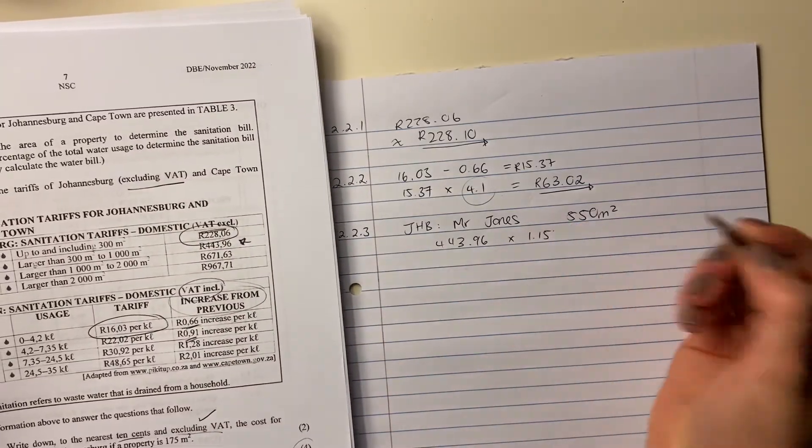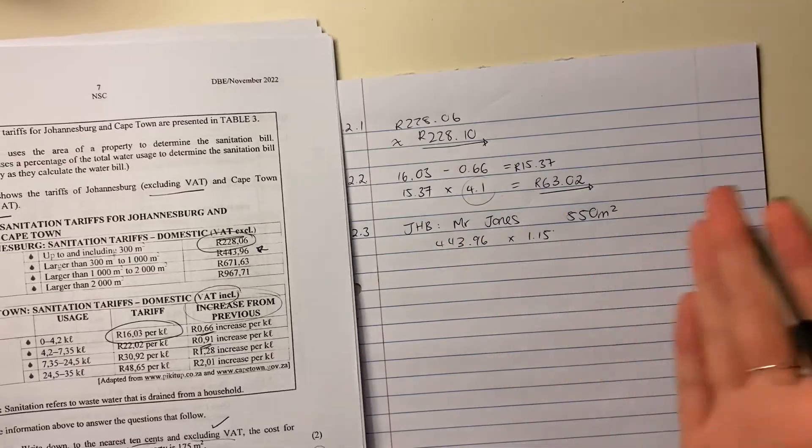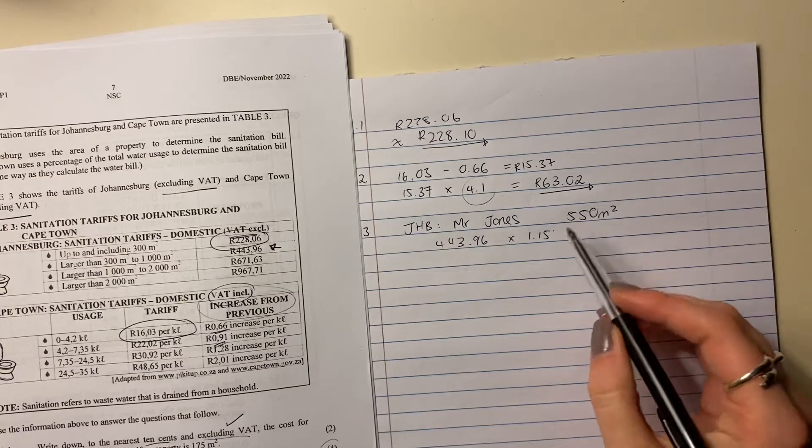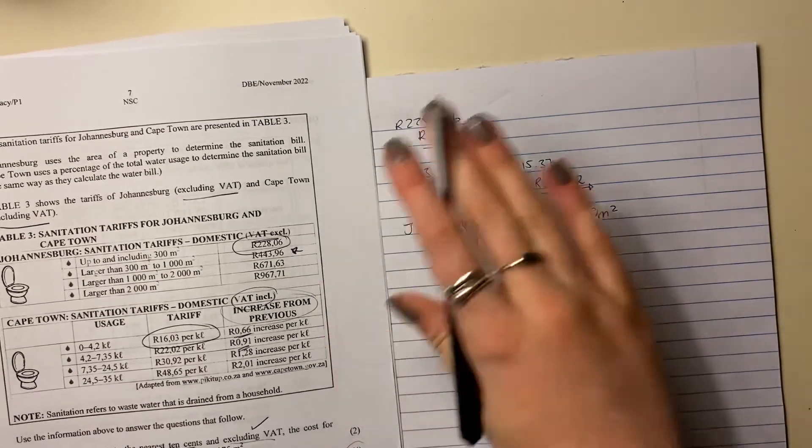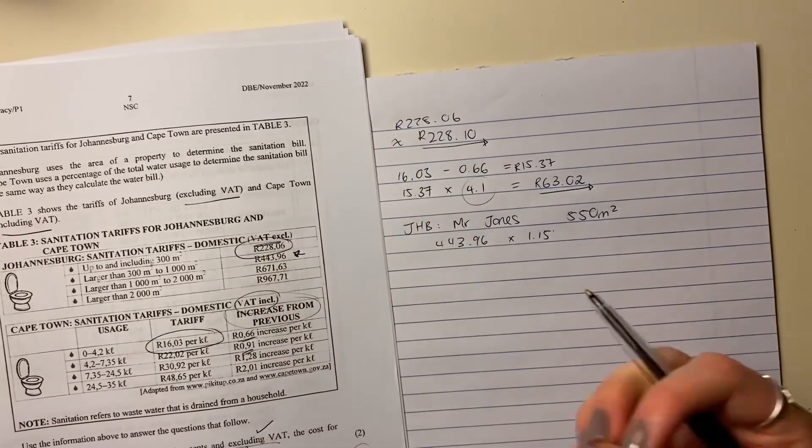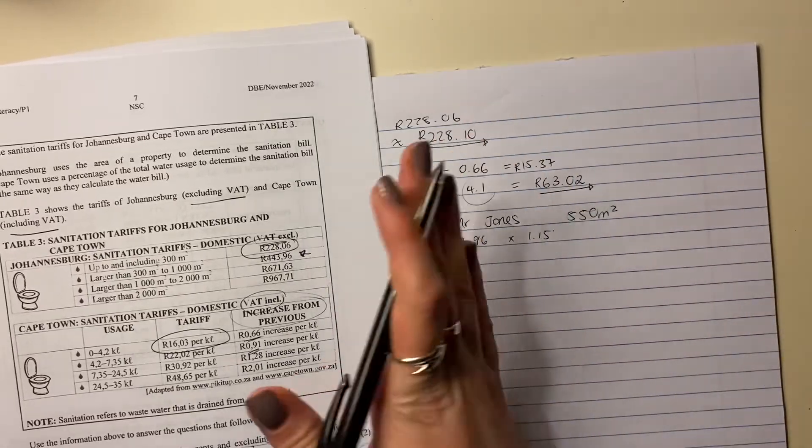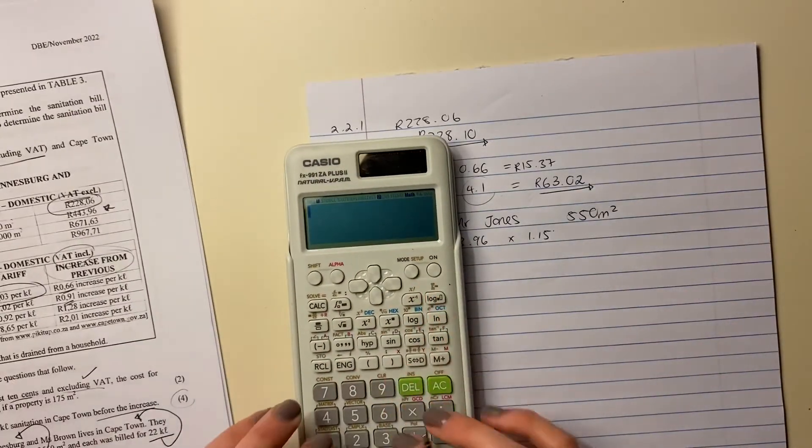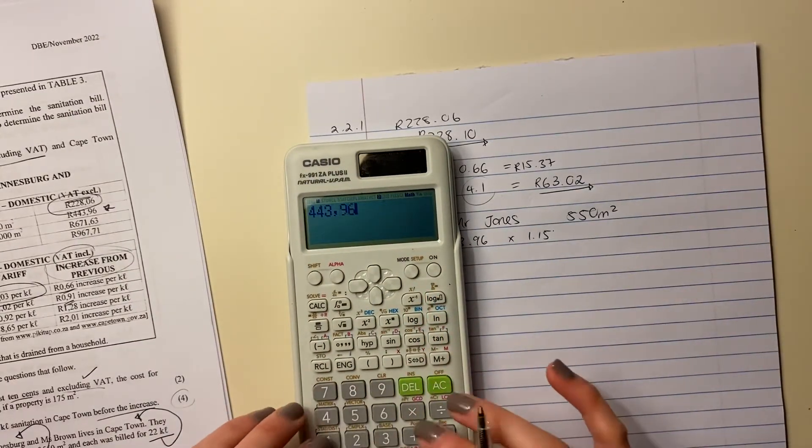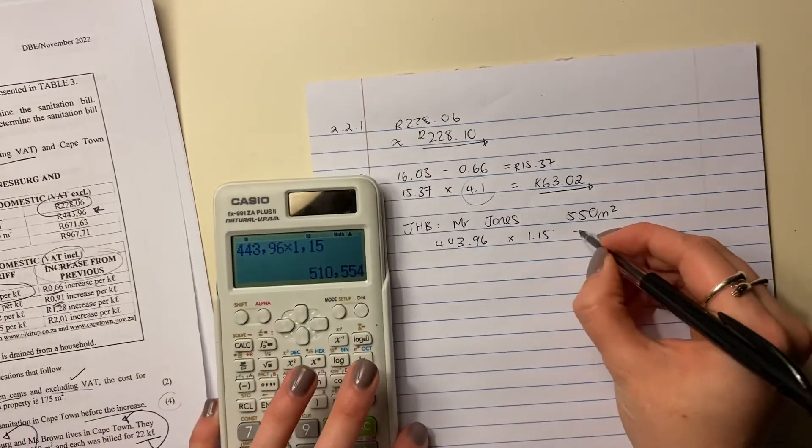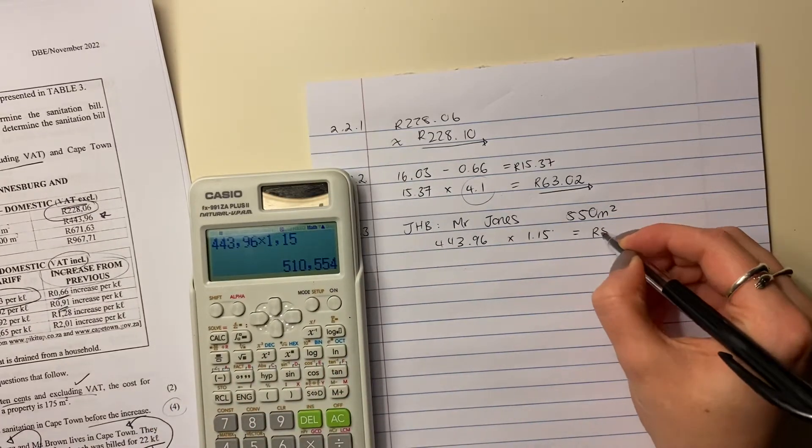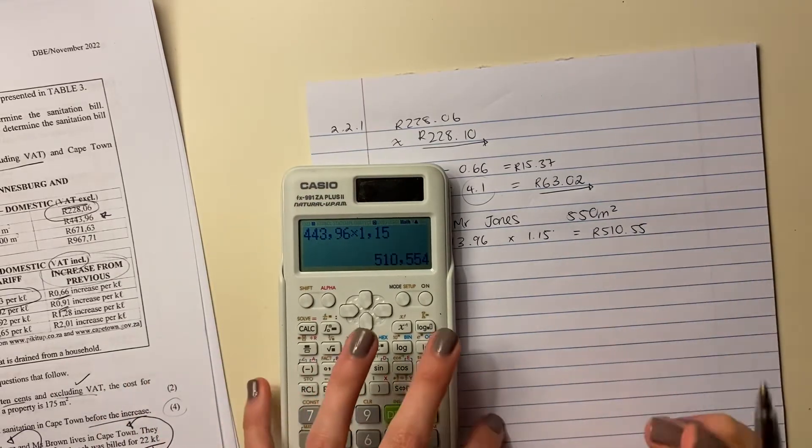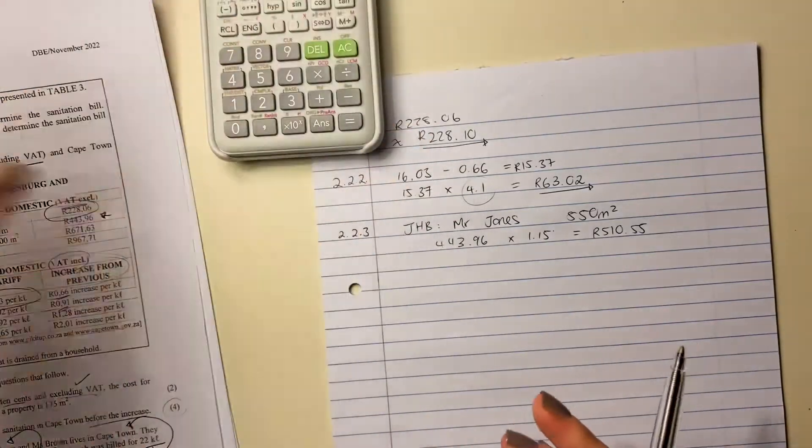We need to now include VAT on top of that. So I'm going to times it by 1.15. Why? Because VAT is 15%. You need to know that. That's not given. And why am I timesing it? Because remember when we are wanting to add VAT onto a price, we times by 1.15. If you're wanting to strip VAT out of a price, you divide by 1.15. So we're going to do that. 443.96 times 1.15. And the amount that he's going to pay for his stand is going to be 510.55. Again, round off to two decimal places because it's a currency. So we're done Mr. Jones.